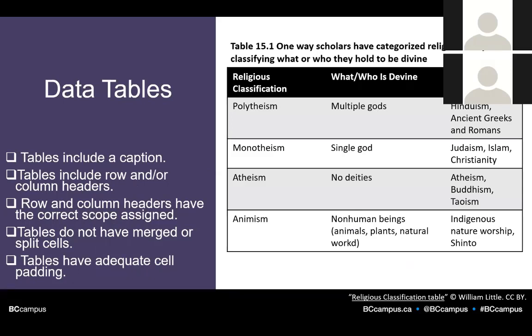For tables to be accessible, they have to be marked up correctly — they need a caption. Heading rows, heading cells, and heading columns must be marked as headings with the correct scope assigned. There should be no merged or split cells, and there should be adequate cell padding. In the example shown, the table has a caption and a header row with three cells marked as table headers with scope set to column. You can find more specific directions in the Accessibility Toolkit's chapter on tables, which I'll be providing a link to at the end of this presentation.